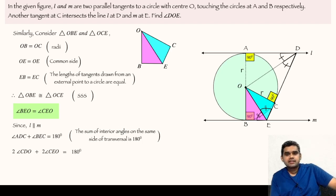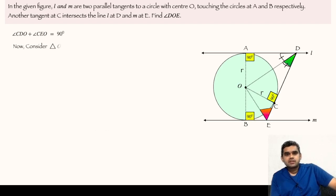From here we can take two common and write angle CDO plus angle CEO is equal to 180 degrees. From here we get angle CDO plus angle CEO is equal to 90 degrees.